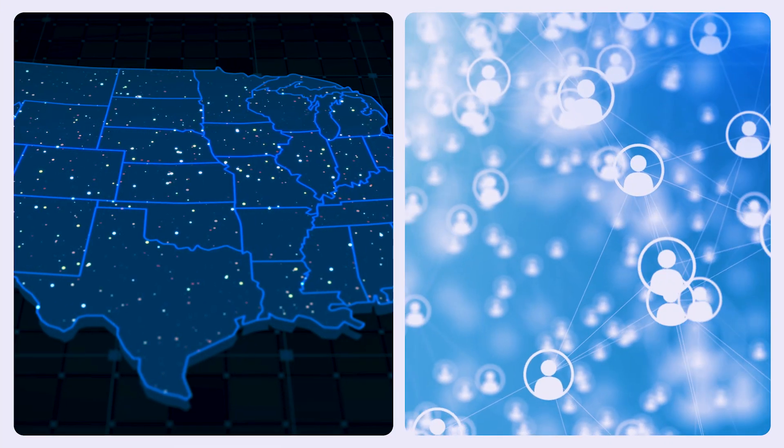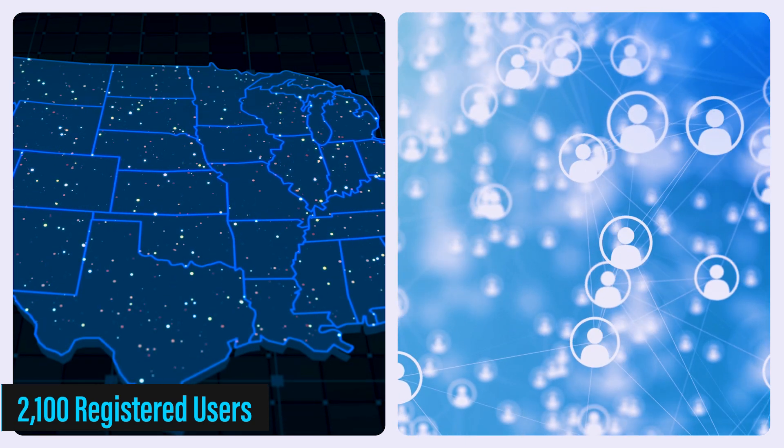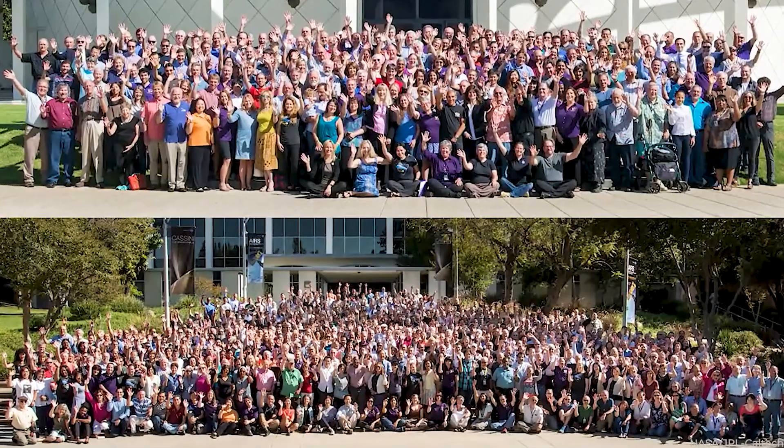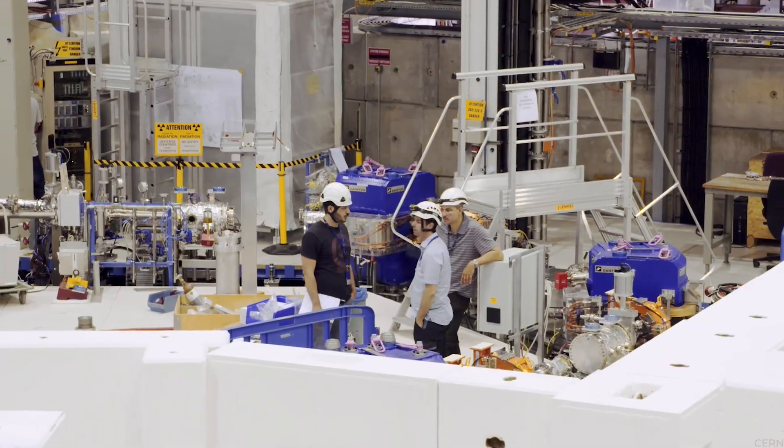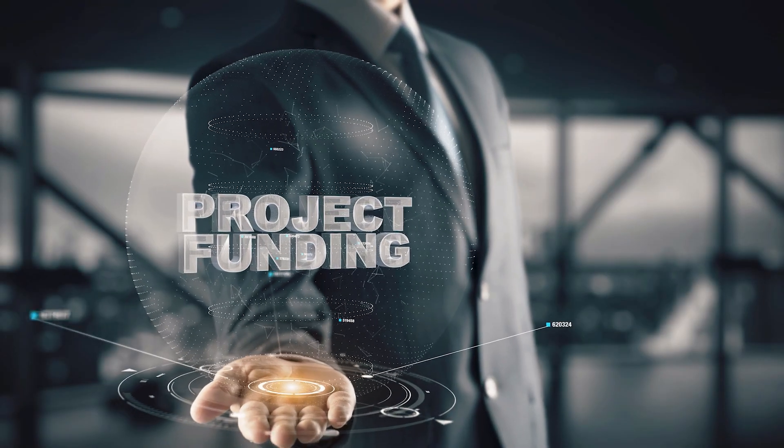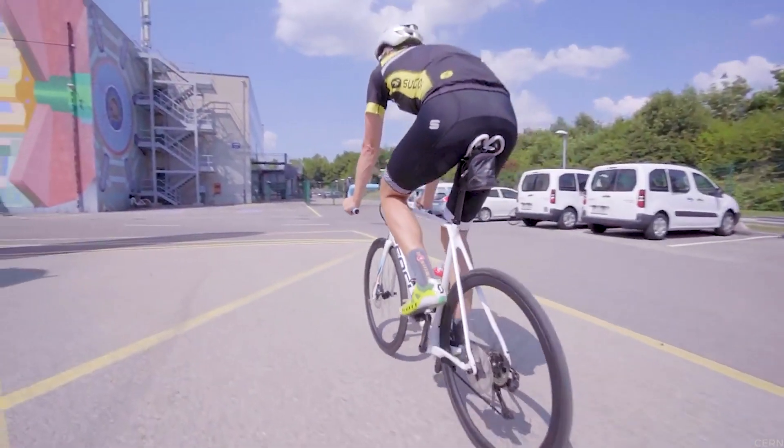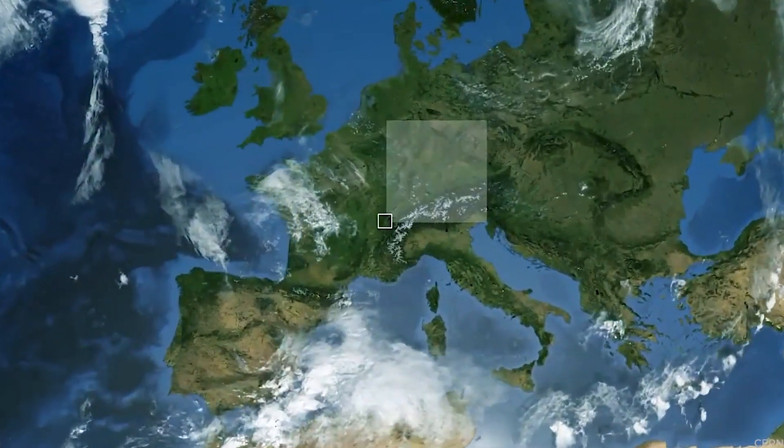Currently the United States has the largest user community at CERN, with over 2,100 registered users from US institutes. This highlights the extensive involvement and leadership of US physicists in the research conducted at CERN. It's time to take a step back, rethink our priorities and put our money where it matters most. We need a scientific funding revolution, one that doesn't just reward the same old players. And that's the latest on CERN's shocking proposals for the future. We'll see you in the next video. Thanks for watching.